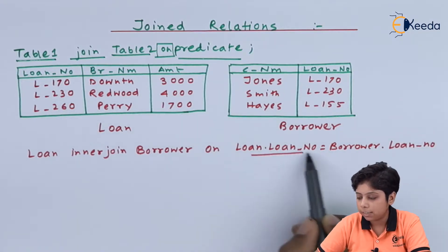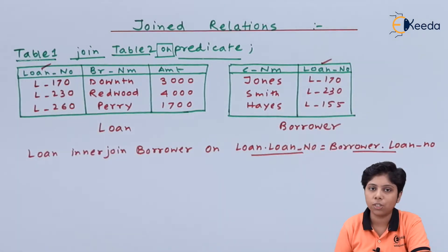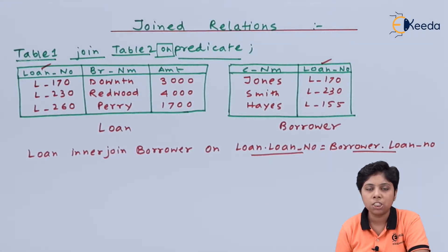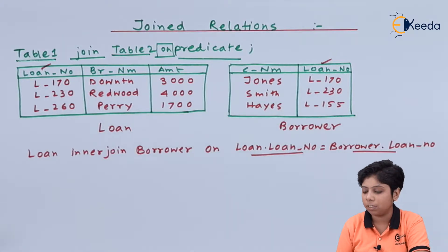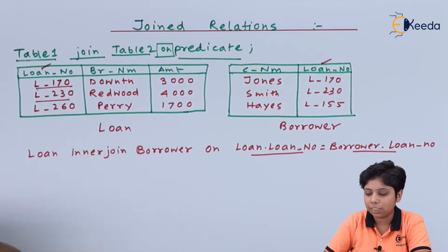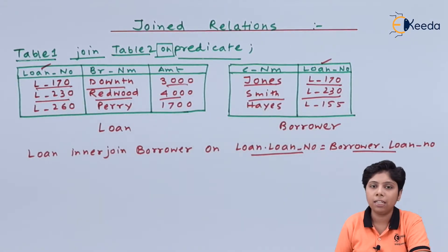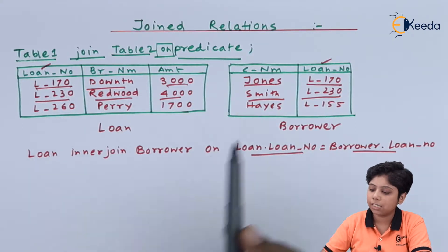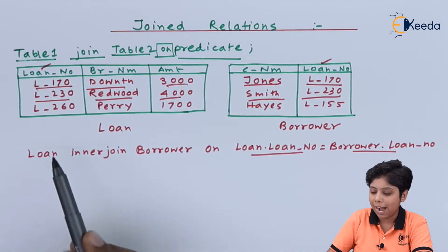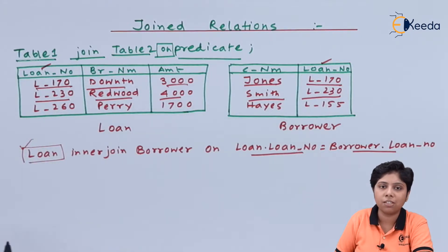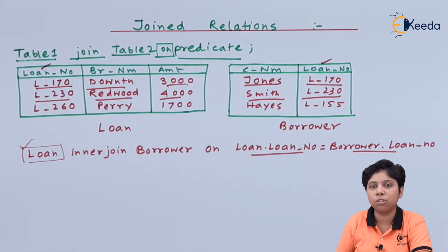The predicate here is that the loan number in both tables must match with each other. Since we are intersecting common values, there should be common attributes and common values so we can perform the inner join. The result will consist of the loan number, branch name, amount, and customer name. The attributes of the left relation appear first in the resultant relation.